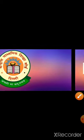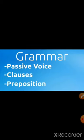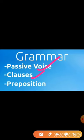In the grammar portion, the topics of passive voices, clauses, and prepositions have been removed. From the 12-mark grammar section — which includes editing or omission, dialogue completion based on reported speech, rearrangement or reordering of sentences, jumbled words, and fill-in-the-gaps — passive voices, clauses, and prepositions are no longer part of any question type.